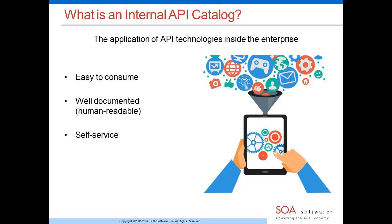The fundamental difference between a catalog and a community is that the catalog is a thing — a real entity you can touch and interact with — whereas the community is the group of people that engage in and around that catalog. The API catalog is the application of API-centric technologies inside the enterprise. It gets uncomfortable when we talk about APIs, services, and SOA, because there's much religious debate about what's a service versus an API.